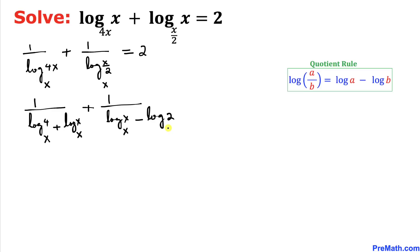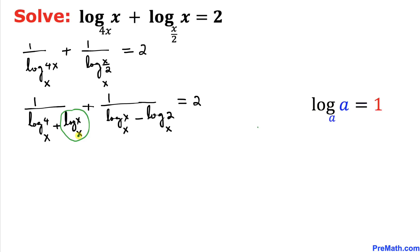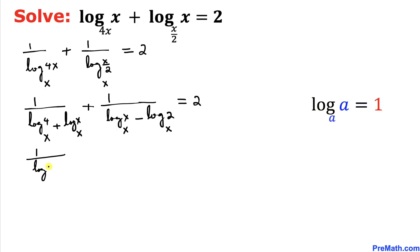Now, log of x with base x equals 1, since the argument and base are the same. Applying this identity, the first fraction becomes 1 divided by (log of 4 with base x plus 1), and the second fraction becomes 1 divided by (1 minus log of 2 with base x), equals 2.